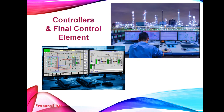Good day class. For today you're going to learn two new things in process control: the controllers and the final control element. If you recall in our previous discussion when we were discussing the control system represented in the form of a block diagram, these two elements are actually lumped as one because the final control element receives information from the controller on what is to be done on a particular process variable, so that control can be affected on the controlled variable.